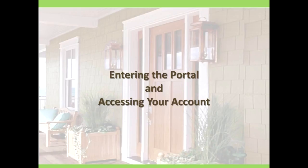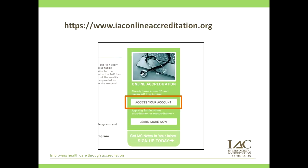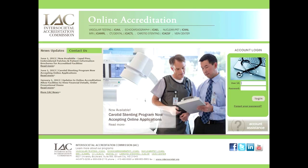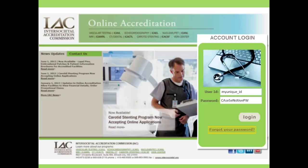We'll start our project today by entering the online account portal and accessing an account. To get to the login screen, you may enter the www.iaconlineaccreditation.org URL into your browser, or find the Access Your Account button on any of our IAC websites. When you go to the login screen, you'll see a screen with Current News, Updates, and Contact Us tab on the left, and the login box on the right.